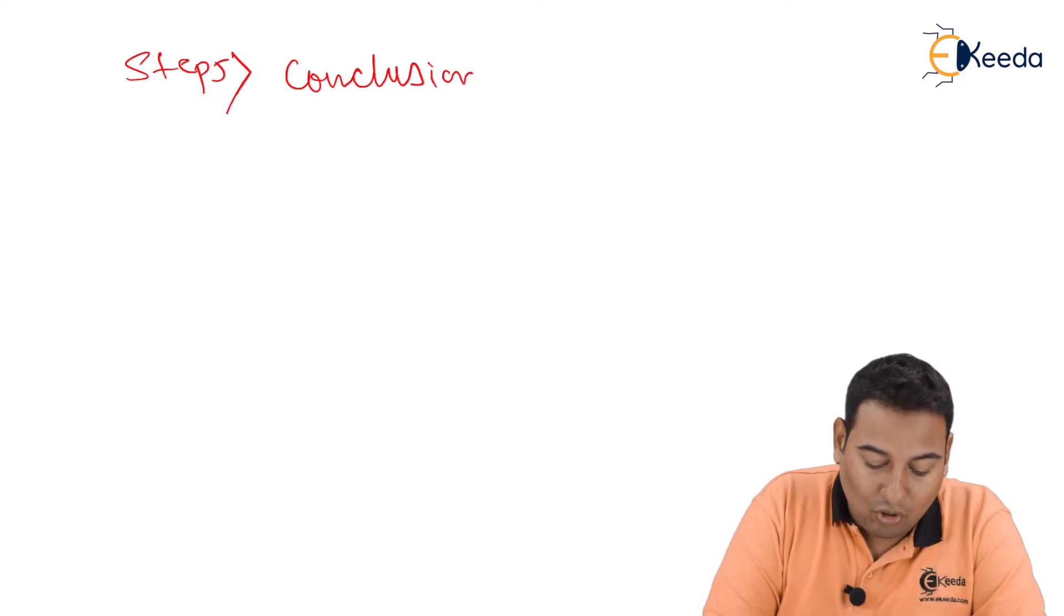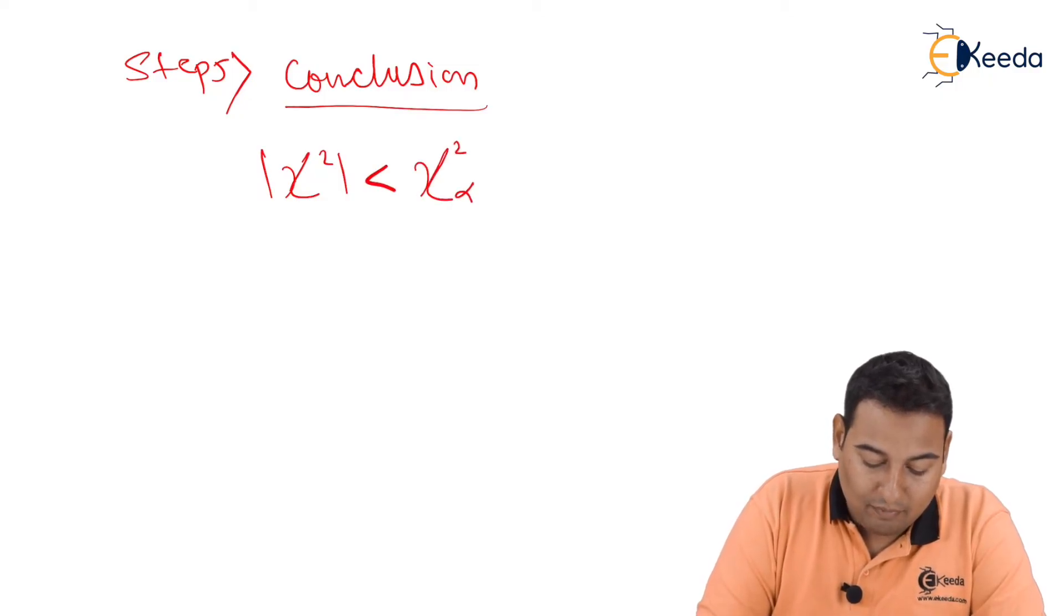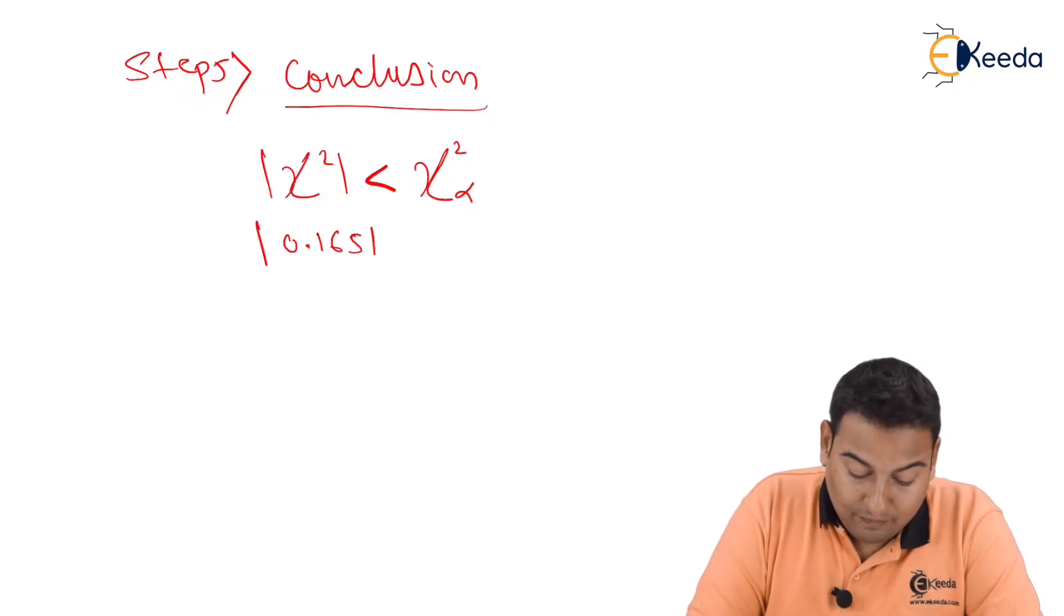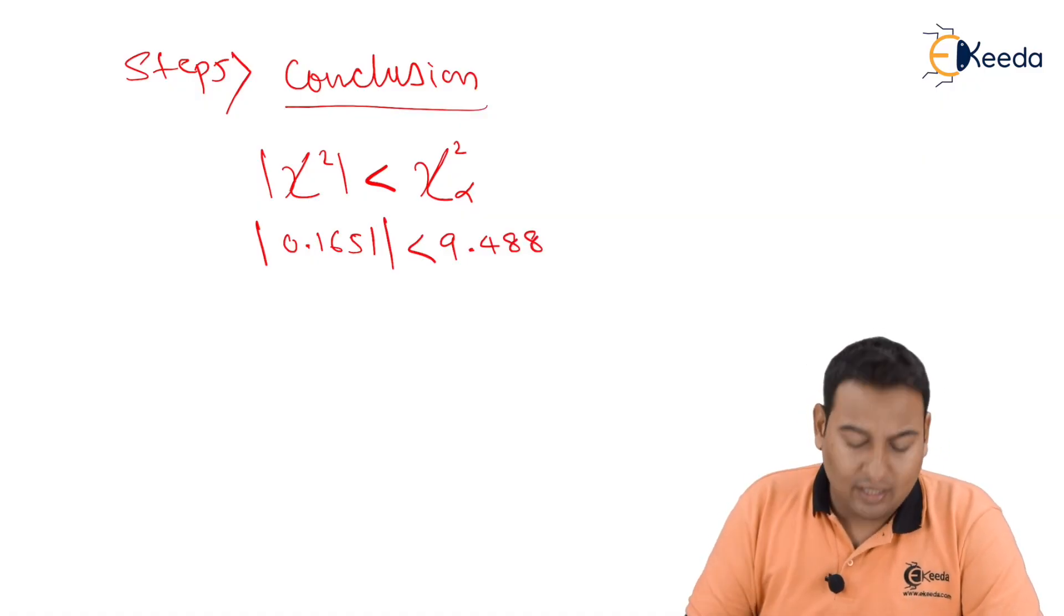Now let us check for the last part, that is step number five, which is conclusion: whether to accept or reject. Here, mod of chi-square is less than chi-square alpha, because mod of chi-square is 0.1651 that we got from calculation, which is less than chi-square alpha 9.488.